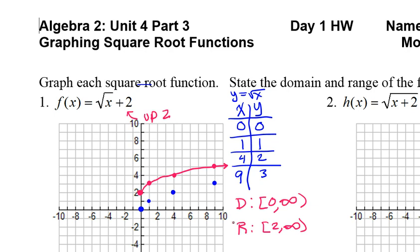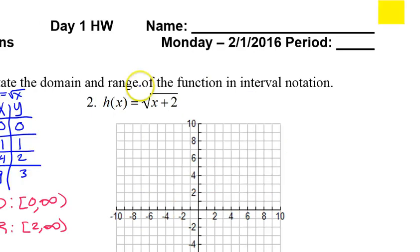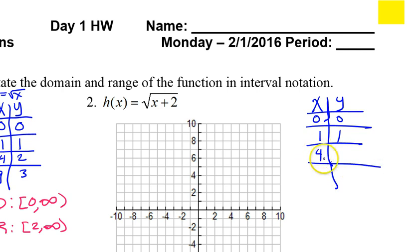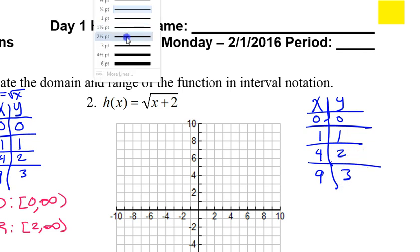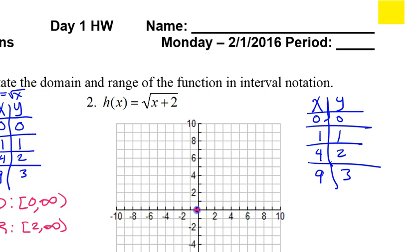All right. I'm going to pause the video and try to do number two by yourself. All right. So on number two, this is what you should have done. So we had our parent function. So we have (0,0), (1,1), (4,2), (9,3). So that was going to look like this.